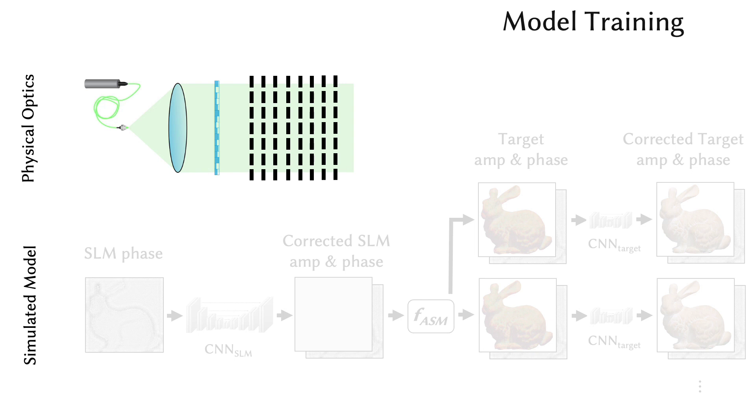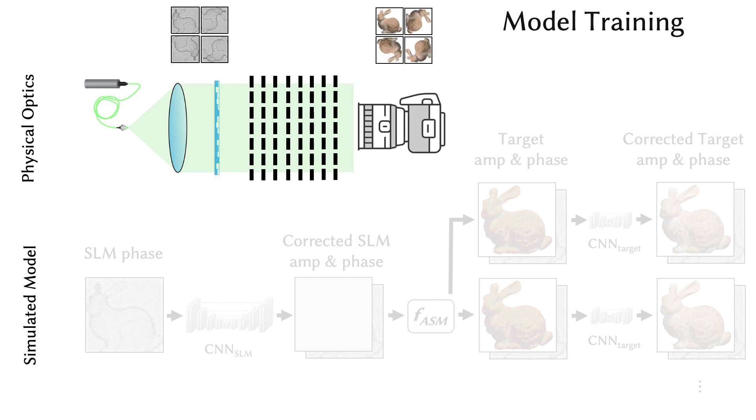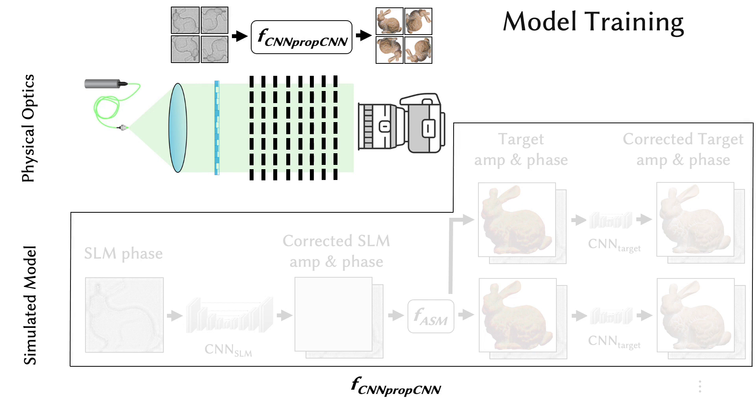Our model is trained by displaying a pre-computed pool of thousands of phase patterns on the SLM. We use a camera focused on different target planes to record the corresponding intensity images. Our model is then trained using standard machine learning solvers by adjusting the parameters of our CNNs to predict the recorded intensity pairs from the phase maps.